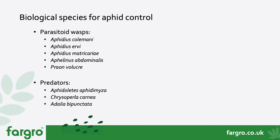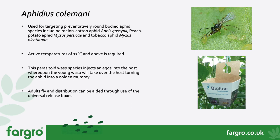Aphidius colemani is probably one of the most widely used parasitoid wasp species for aphid control. It's used for preventative control of round-bodied aphid species, including melon cotton aphid (Aphis gossypii) and peach potato aphid (Myzus persicae). The parasitoid wasp is active above 12°C, however above 30°C efficacy reduces, so between 12 and 30°C we see good activity from this biological.